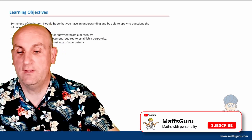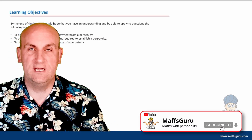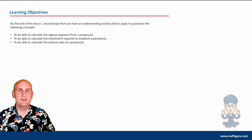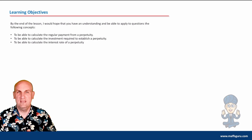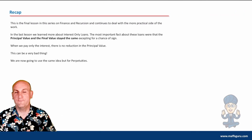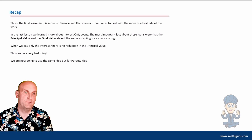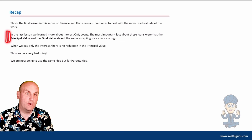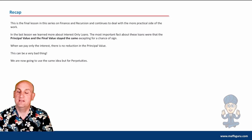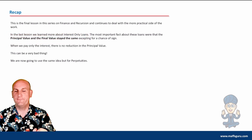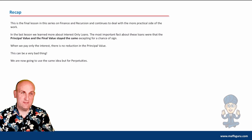That'd be greatly appreciated — it just lets me know that people are watching. So what's this lesson all about? We're going to be dealing with the final part of this course on perpetuities, and it actually builds on the stuff we've done before. In the previous example we looked at interest-only loans. The biggest takeaway was that the principal value and the final value effectively stayed the same except for a sign change, because with an interest-only loan you are only paying the interest.